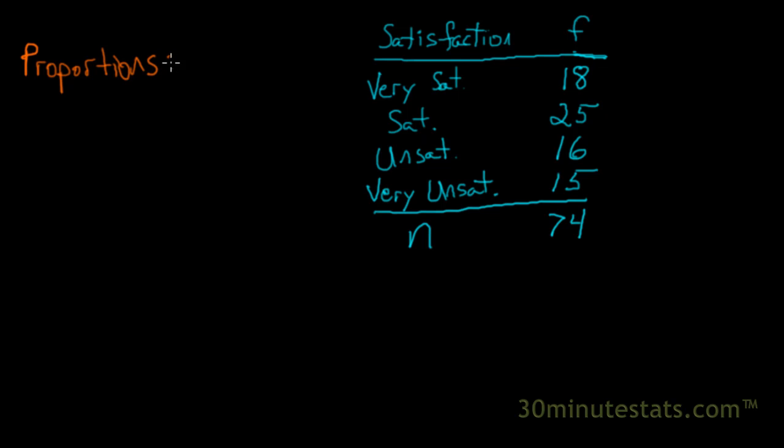And if you'll recall, a proportion is calculated by taking the frequency of an event divided by the sample size. It's that simple. It's just a ratio, a special kind of ratio in that it's a ratio of the number of times something happens relative to the total number of observations in your data.